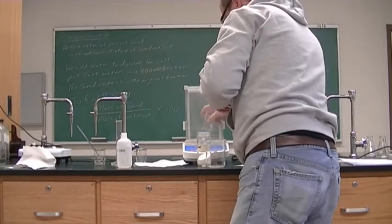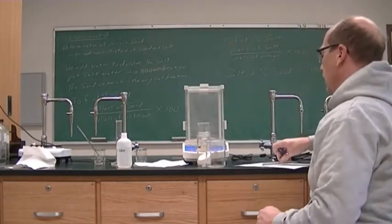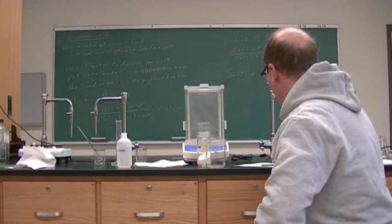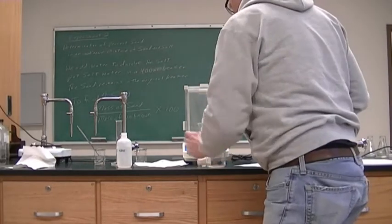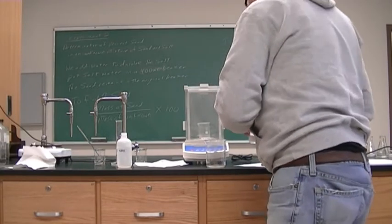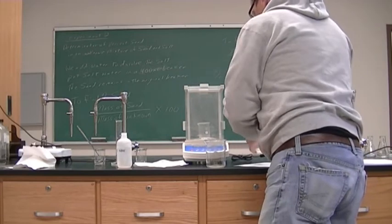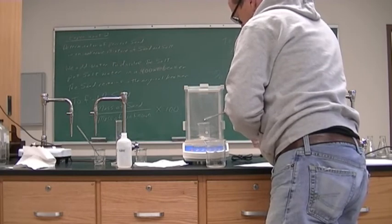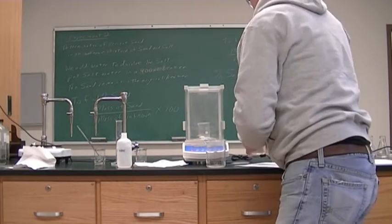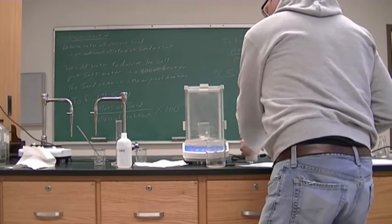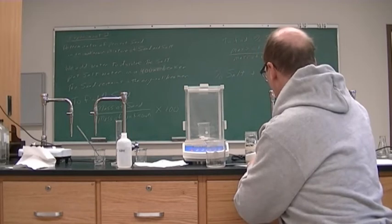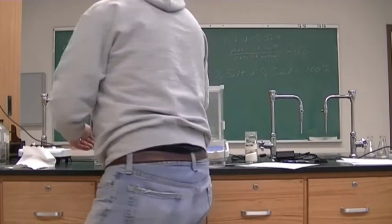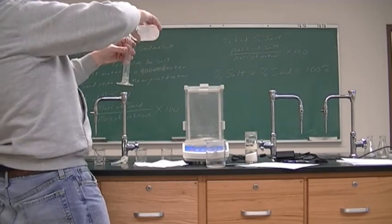We're going to go to beaker number 3, which is different from the first two, so it should have a much different mass. It is 50.5443 grams. We want to go until the scale reads about 52.5, so we'll add the unknown until it reaches approximately 52.5. This one is at 52.4700. We will add 15 ml of deionized water to that one.